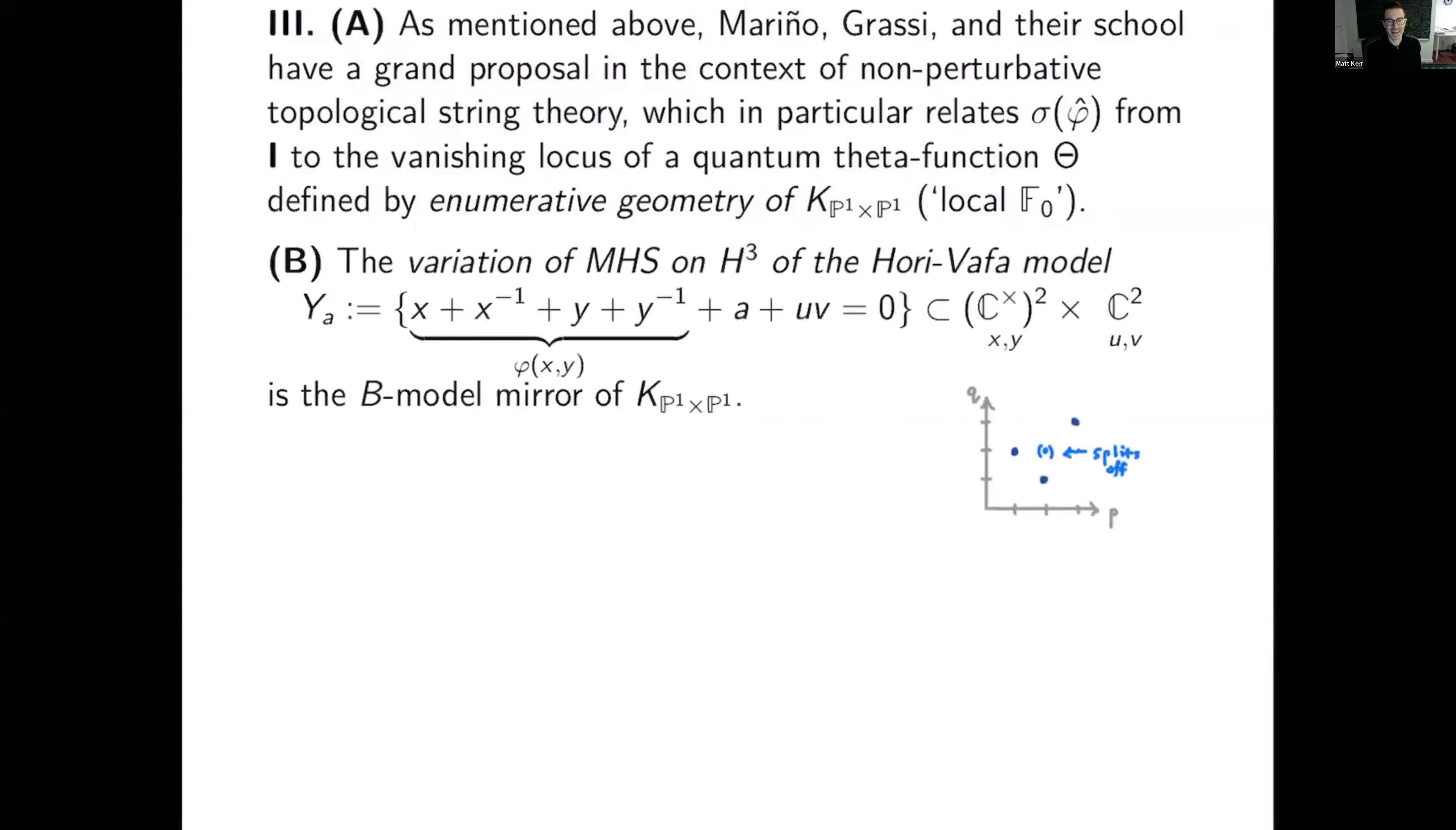So Mourinho and Grassi to the rescue, perhaps. They have a grand proposal in the context of non-perturbative topological string theory, which in particular relates the spectrum of phi hat from one to the vanishing locus of a quantum theta function defined by enumerative geometry of local F0. On the other hand, the sort of B model of the enumerative geometry of local F0 would be the variation of mixed Hodge structure on H3 of the Hori-Vafa model given by, well, you take your Laurent polynomial phi xy, you add u plus v to it.